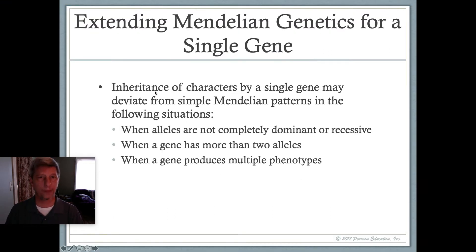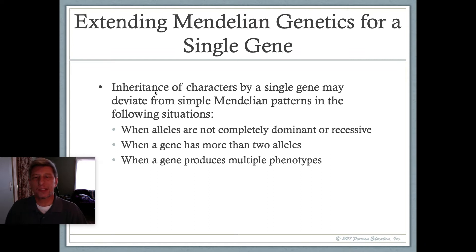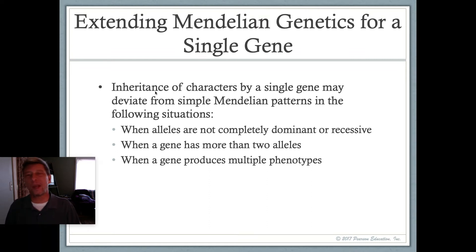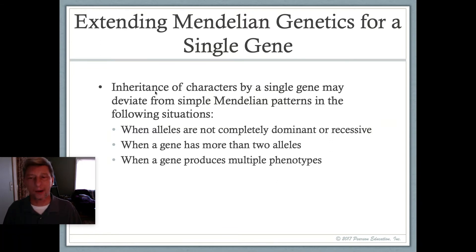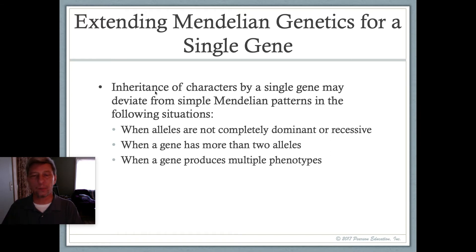There are a couple of things that can change when looking at a single gene. The inheritance of characters may deviate from Mendel's simple patterns in a few different situations. First, when the alleles are not completely dominant or recessive — we call that incomplete dominance or even co-dominance.